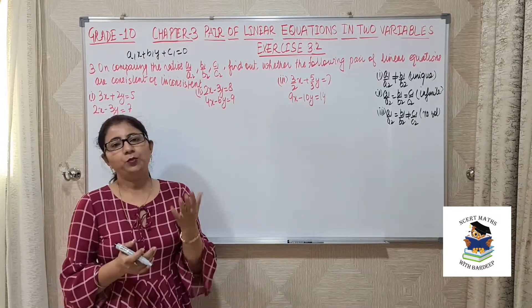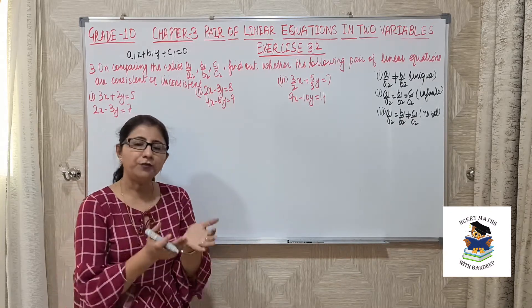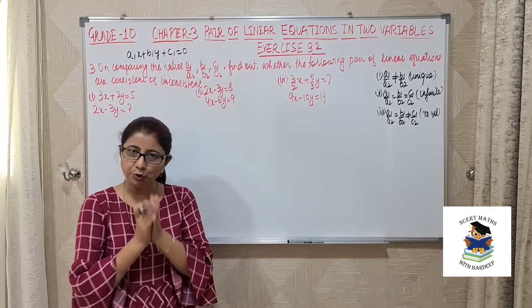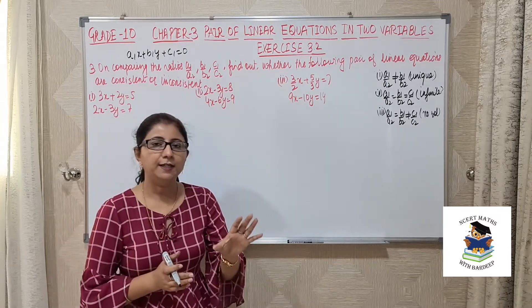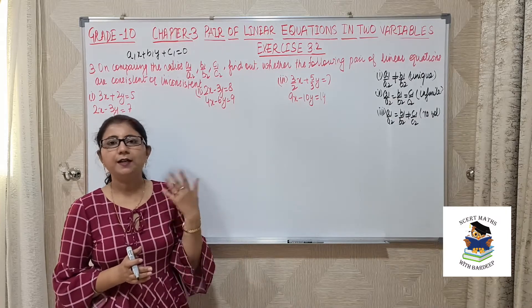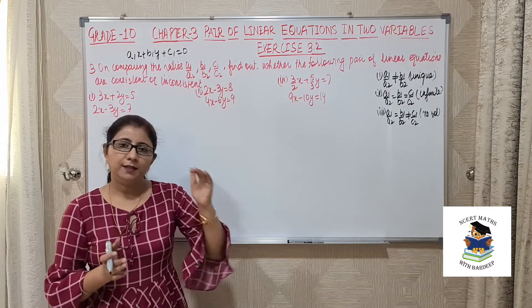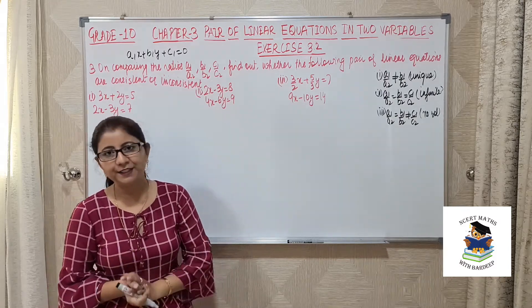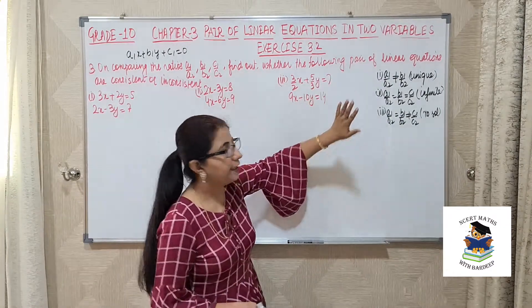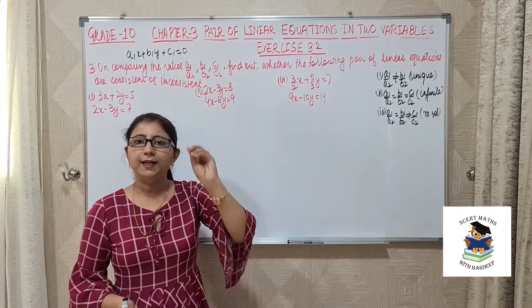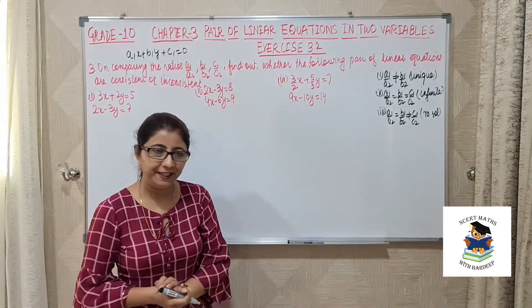Now, how to determine whether the pair is consistent or inconsistent? If the equations have a unique solution or infinite solutions, those equations are consistent. If there is no solution, then the equations are inconsistent. So for the first two cases it will be consistent, but if no solution then it will be referred to as inconsistent.